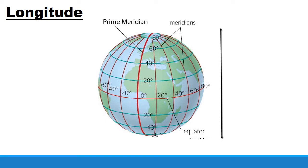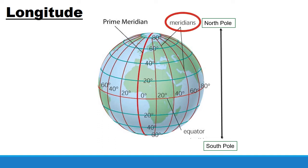Longitude is measured by imaginary lines that run around the earth vertically, up and down, and meet at the north and south poles. These lines are known as meridians. Lines of longitude, also called meridians, are imaginary lines that divide the earth and measure the distance east or west.